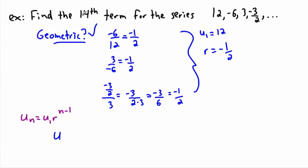So un equals u1 times r to the power of n minus 1. I'm going to just plug in that stuff. But I don't want the nth term, I want the 14th term. So u14 equals u1, which is 12, times r which is negative 1 half, to the power of 14 minus 1, which is 13.